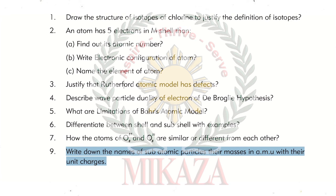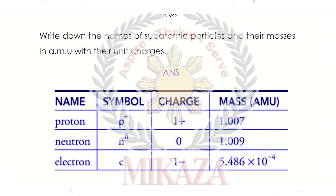Question No. 8: Write down the names of all atomic particles, their mass in AMU, and their unit charges. We draw a table: Proton — charge +1, mass approximately 1.007 AMU. Neutron (symbol N) — charge 0, mass approximately 1.009 AMU. Electron (symbol e⁻) — charge −1, mass 5.486×10⁻⁴ AMU. With this, the short answers of Chapter No. 2, Atomic Structure, are completed.